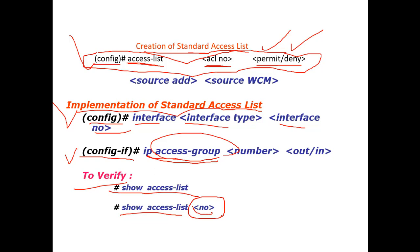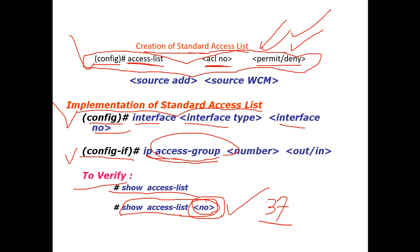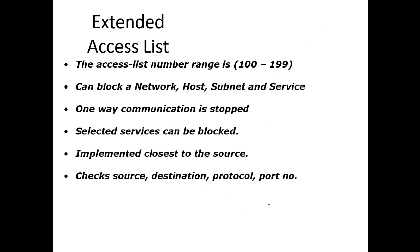If you want to check the access list for a specific number, you can use the 'show access-list' command with the specific number. For example, for entry number 37, you use 'show access-list 37' and it will give you the status of that specific entry — whether connectivity is permitted or denied.